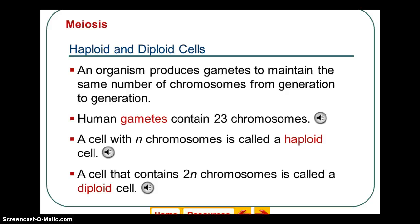This will be on your Unit 7 test: haploid and diploid cells. The prefix 'di' means two, like carbon dioxide has two oxygens. A diploid cell has two copies of chromosomes — one from your mother and one from your father. Our body cells are diploid, so a brain cell and a skin cell are both diploid with 46 chromosomes. Haploid means half — the human gamete contains 23 chromosomes, therefore it is haploid.